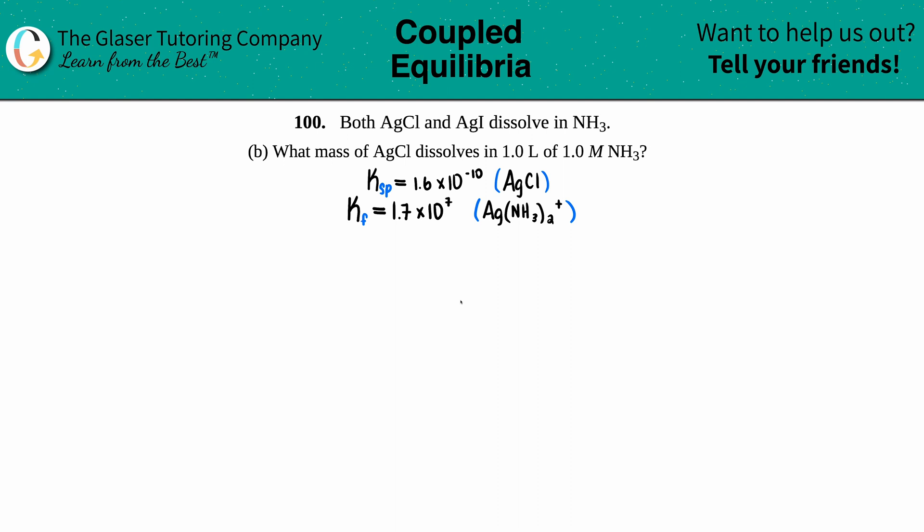Number 100: both AgCl and AgI dissolve in NH3. Part B asks what mass of AgCl dissolves in 1.0 liters of a 1.0 molar solution of NH3. To answer this question, I had to go to the back of the textbook to find a couple of things.